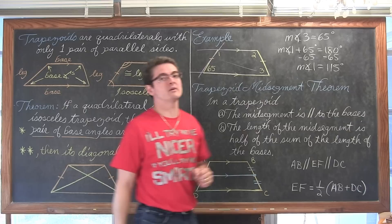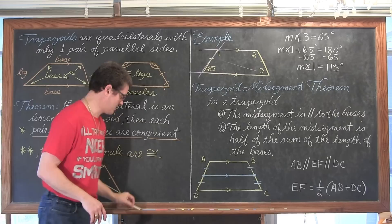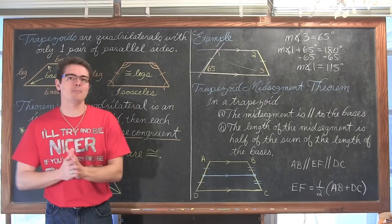The measure of angle 1 is 115 degrees and the measure of angle 3 is 65 degrees. We can verify this by confirming they add up to 180. Angle 2 is a congruent base angle to angle 1, so it is also 115 degrees.